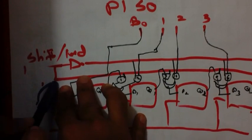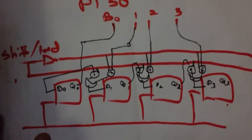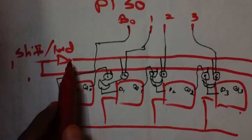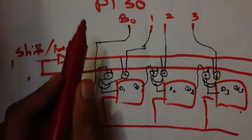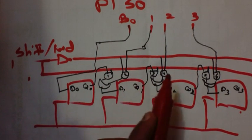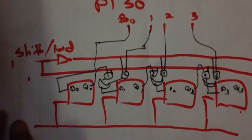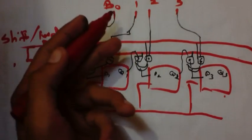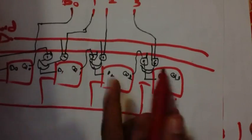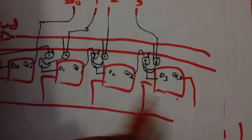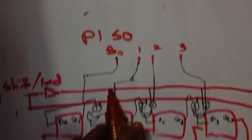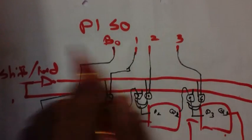When shift mode is activated, the control line is high (1), so the inverse becomes 0. AND gates 2, 4, and 6, which are active in load mode, become inactive. Instead, AND gates 1, 3, and 5 become active, passing the Q output of one flip-flop as input to the next. This shifts data serially through the flip-flops, and we get serial data output from the last flip-flop. This is how the parallel in serial out register works.